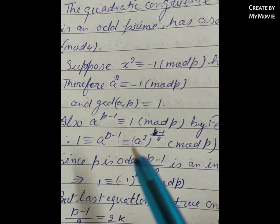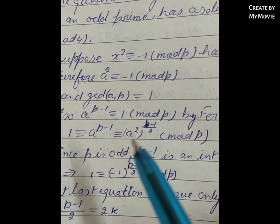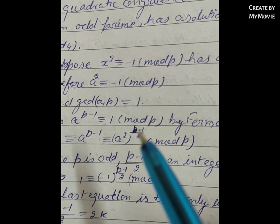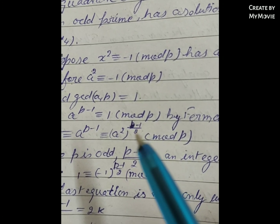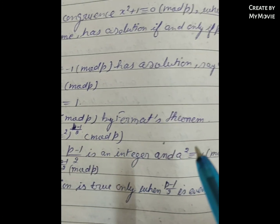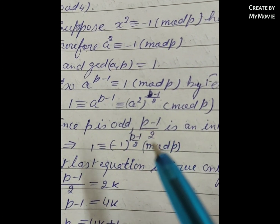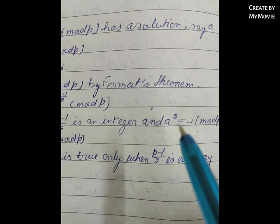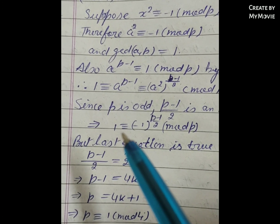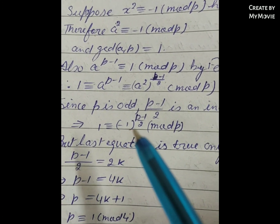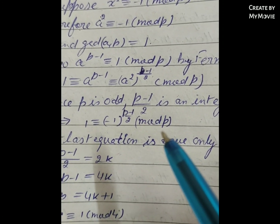So 1 ≡ a^(p-1) ≡ (a²)^((p-1)/2) (mod p). Since a² ≡ -1 (mod p), this implies 1 ≡ (-1)^((p-1)/2) (mod p).